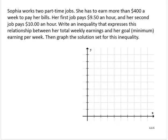Sophia works two part-time jobs. She has to earn more than $400 a week to pay her bills. Her first job pays $9.50 an hour, and her second job pays $10 an hour. Write an inequality that expresses this relationship between her total weekly earnings and her goal, minimum earning per week, and graph the solution set for this inequality.